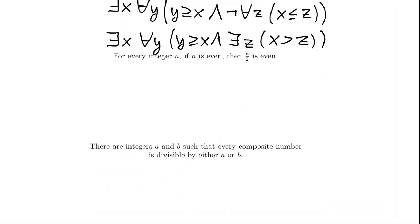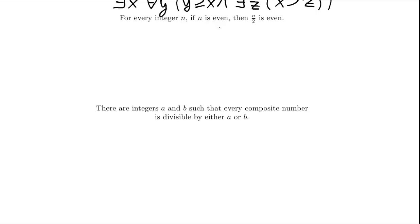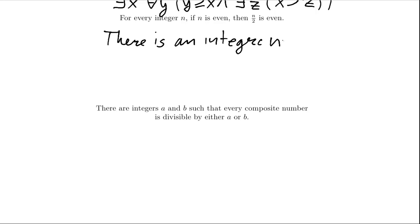Now let's look at examples written in plain English. For every integer n, if n is even, then n over 2 is even. This is false, so we want to say: it is false that for every integer n, if n is even, then n over 2 is even. When we pass the negation through the 'for all n,' it becomes 'there is an n.' Now we have the implication 'if n is even, then n over 2 is even,' and we want to say that implication is false. An implication is false in only one case: when the if-part is true and the then-part is false.